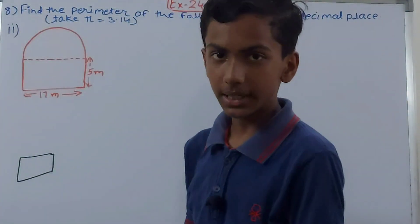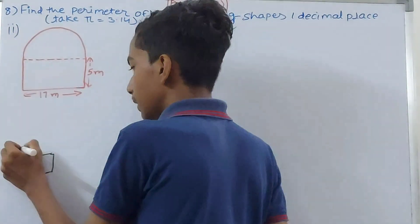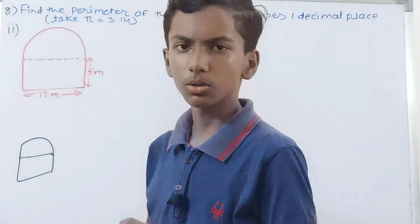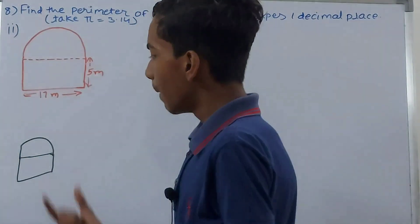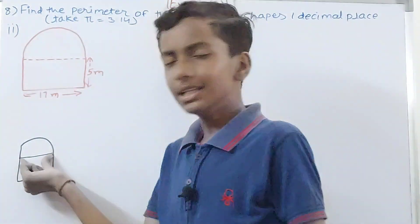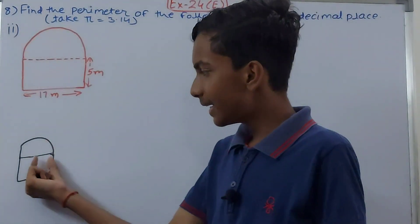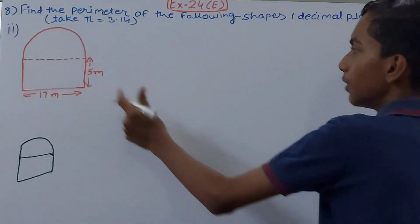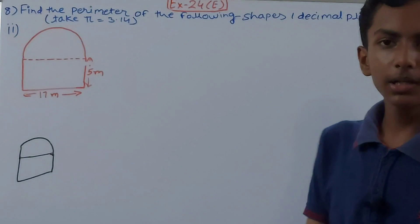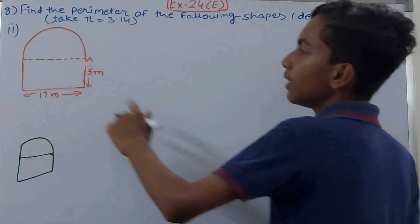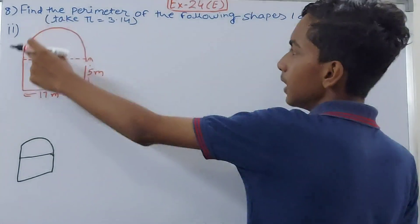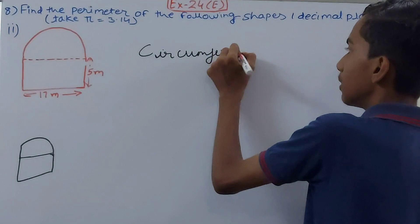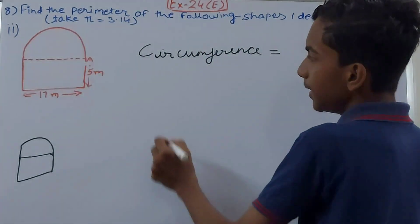The perimeter of the whole figure includes only the outer boundary. The diameter line shared between the semicircle and the rectangle is interior, so we exclude it. What we include is: the three sides of the rectangle and the curved circumference of the semicircle.